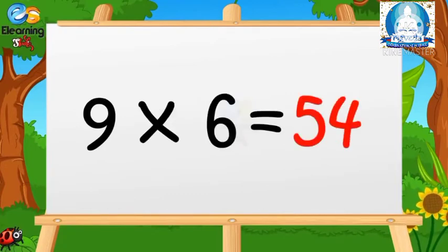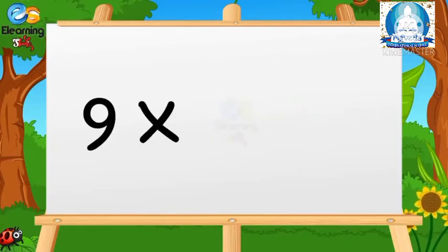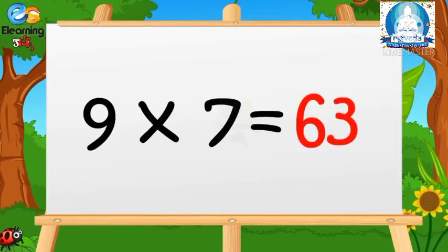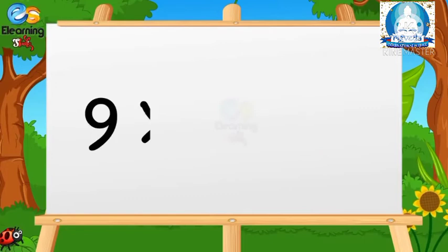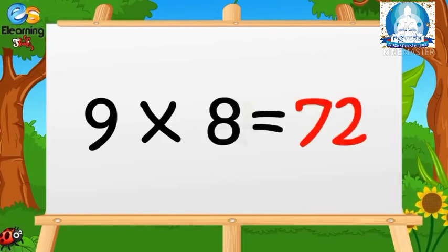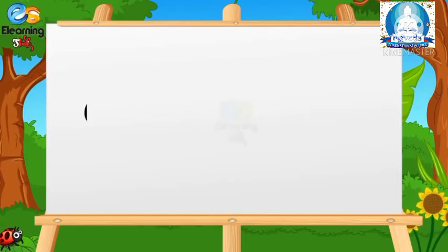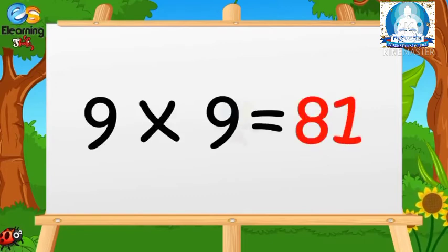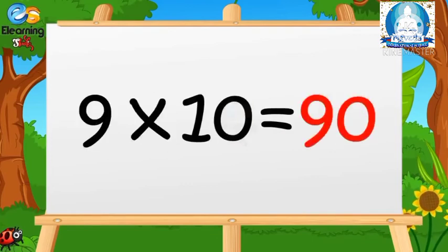Nine sixes are fifty-four. Nine sevens are sixty-three. Nine eights are seventy-two. Nine nines are eighty-one. Nine tens are ninety.